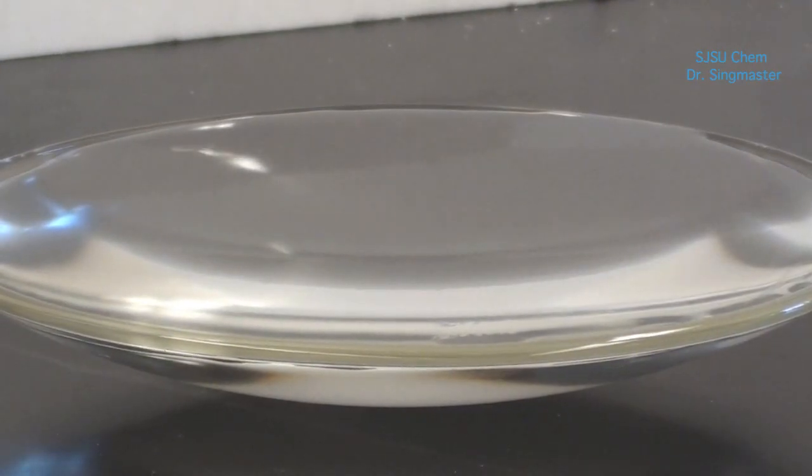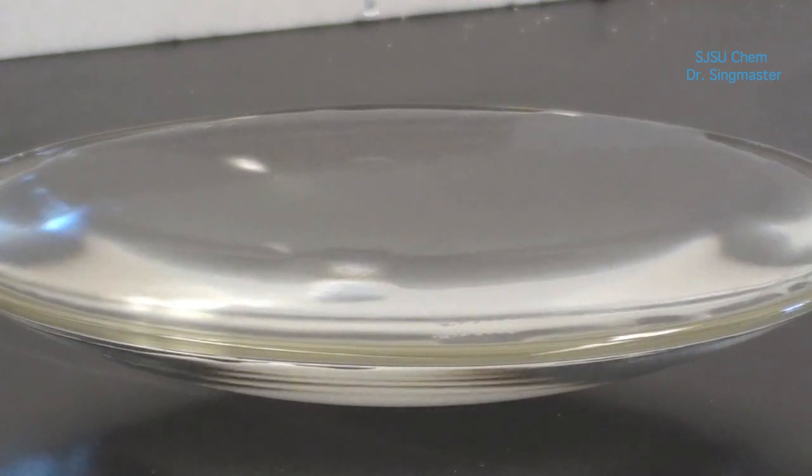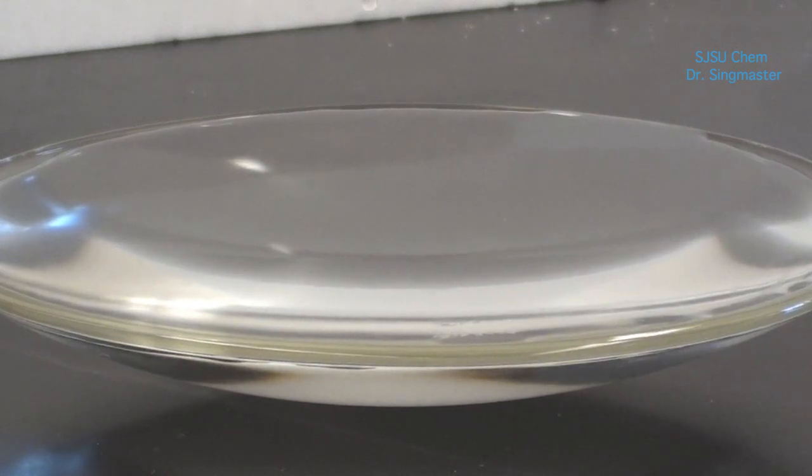Now we're going to start adding drops of the stearic acid solution until you see a small circle looking sort of like a contact lens floating on the stearic acid. You want to count the drops of stearic acid.